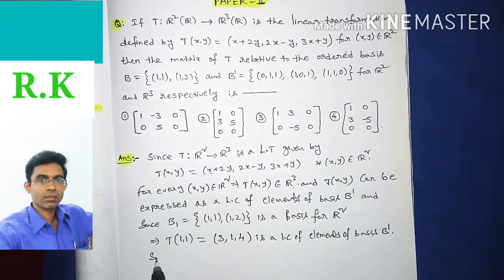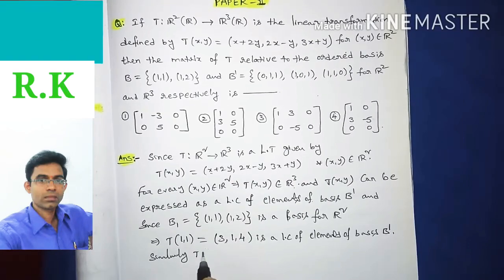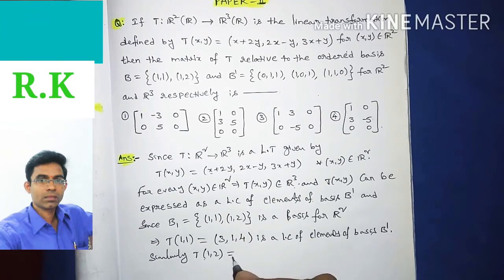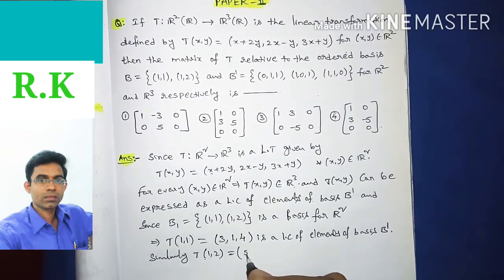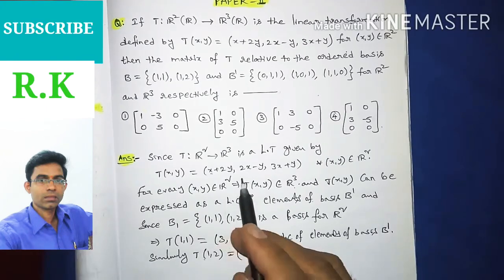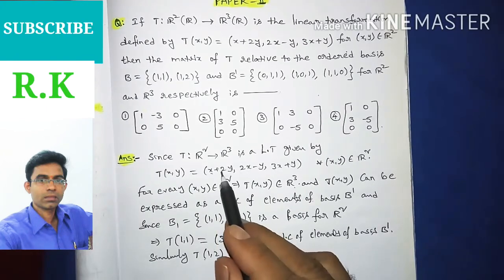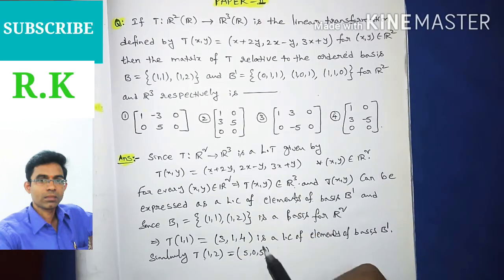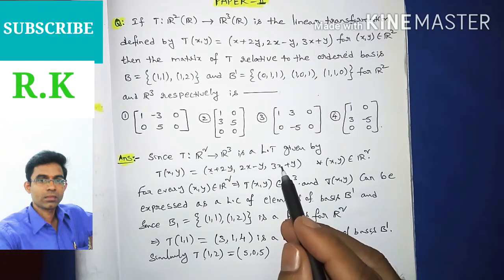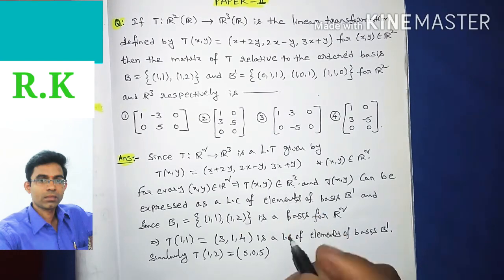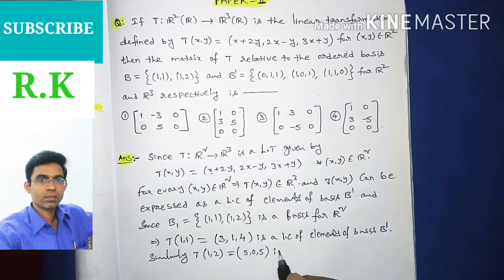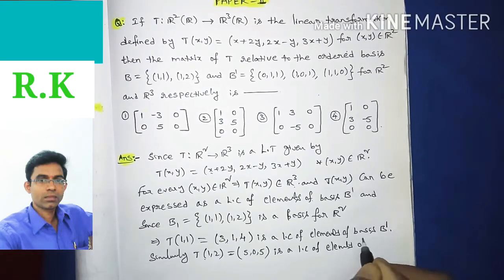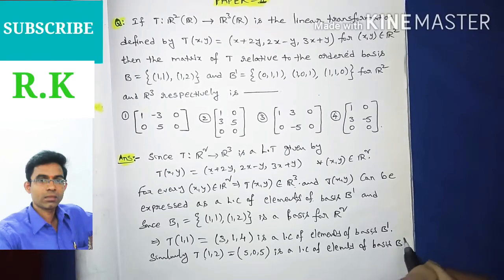Similarly, T(1,2) by substituting x = 1, y = 2: first coordinate is 1 + 4 = 5, second is 2 − 2 = 0, third is 3 + 2 = 5. So T(1,2) = (5, 0, 5), also a vector in R³ which is a linear combination of elements of basis B'.